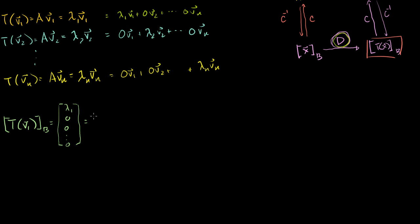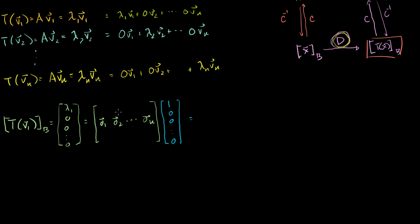But it's also equal to D — the matrix with column vectors d1, d2, all the way through dn — times the B-representation of vector V1. The B-representation of V1 is just 1 times V1 plus 0 times V2, plus 0 times everything else, since V1 is a basis vector. So multiplying D by that coordinate vector gives 1 times d1 plus 0 times d2, which is just equal to d1. So just like that, we have our first column of matrix D.